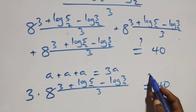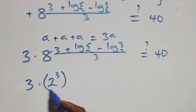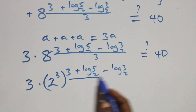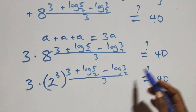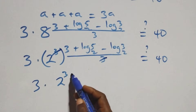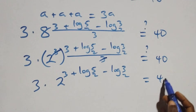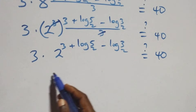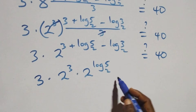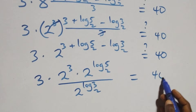We rewrite 8 as 2^3, so 3 times (2^3)^((3 + log₂(5) − log₂(3))/3). The threes in exponent cancel, giving 3 times 2^(3 + log₂(5) − log₂(3)). Applying the exponent law, this becomes 3 times 2^3 times 2^(log₂(5)) divided by 2^(log₂(3)). This equals 40.